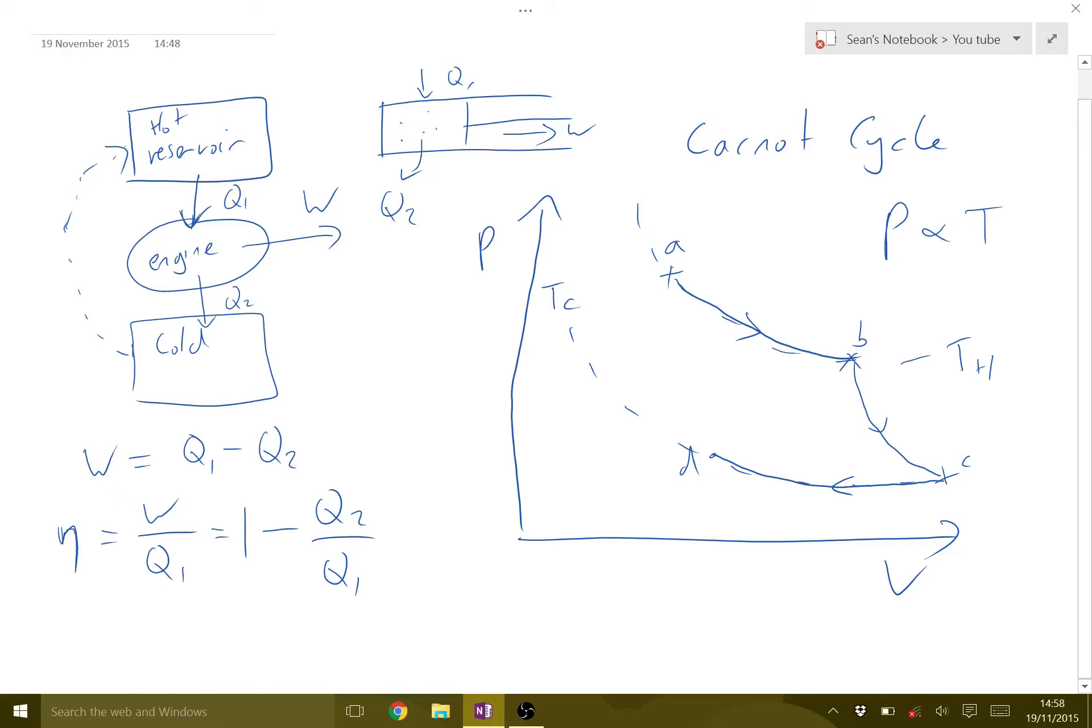Now we need to get back to A, so then we have another adiabatic process. So it's an adiabatic compression. Remember, adiabatic, the heat is zero. That gets us back to the start, which means we can go again, and that's why this is a cyclic process.